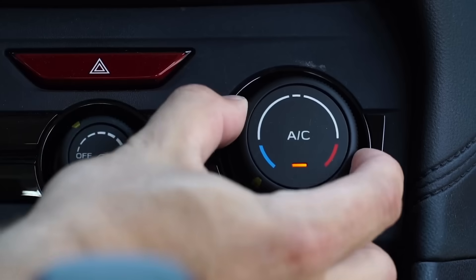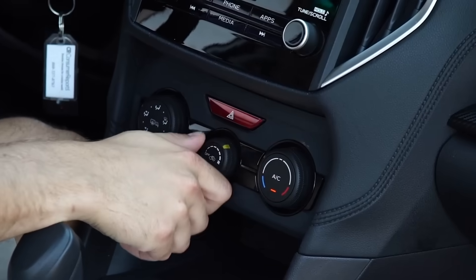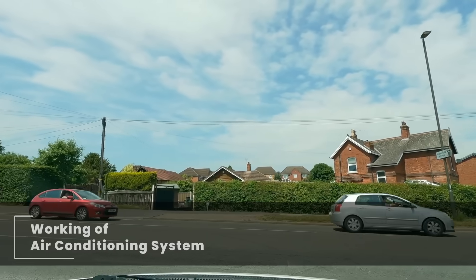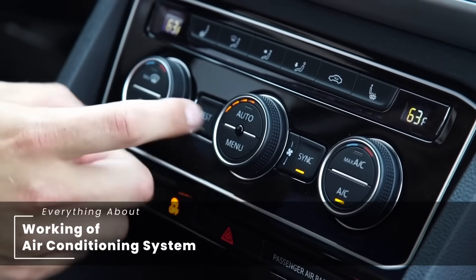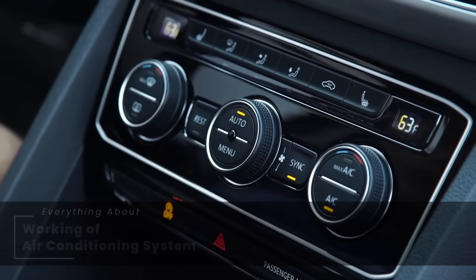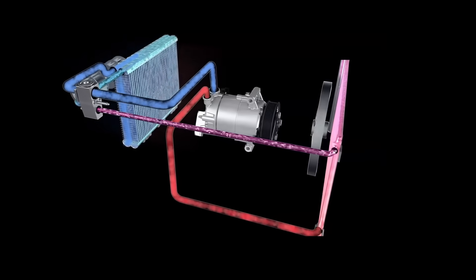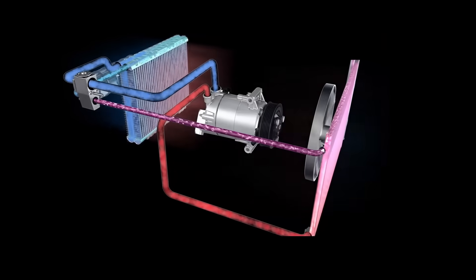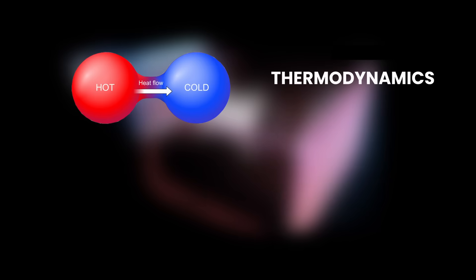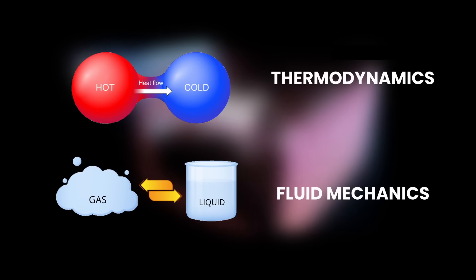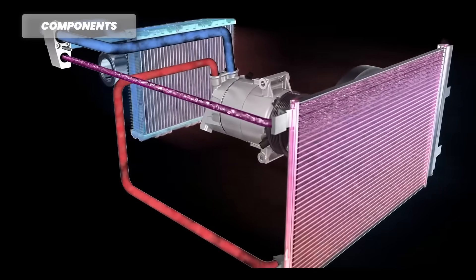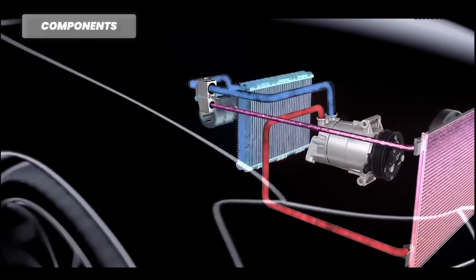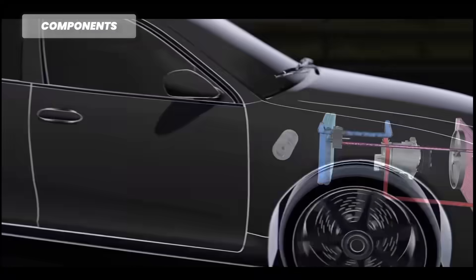How does your car's air conditioning system keep you cool on those scorching hot days? Let's take a closer look at how the car AC works. The car AC system operates on the principles of thermodynamics and fluid mechanics. It consists of several key components working together to cool the air inside your vehicle.